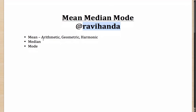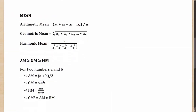The mean can be of three types: the arithmetic mean, the geometric mean and the harmonic mean. The arithmetic mean is very similar to the average — you add all the numbers up and divide them by n, and the result is the arithmetic mean. In geometric mean, you multiply all the numbers a1, a2, a3 till an and take the nth root of them. That is what the geometric mean is.